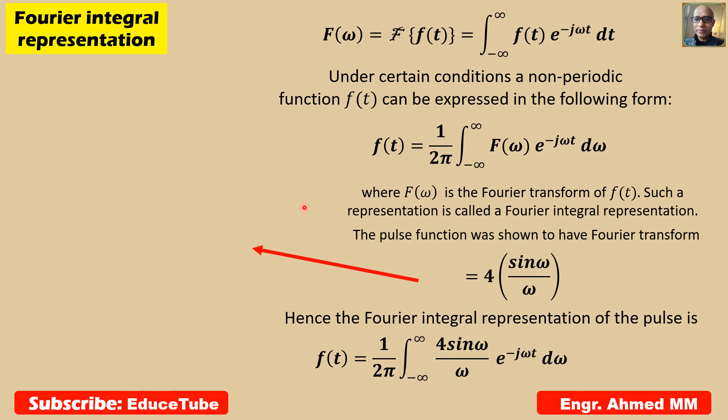In our previous example, the pulse function was shown to have Fourier transform 4 sine omega over omega. We can bring back that graph; it was a sinc function.